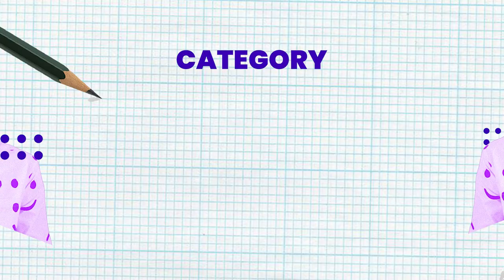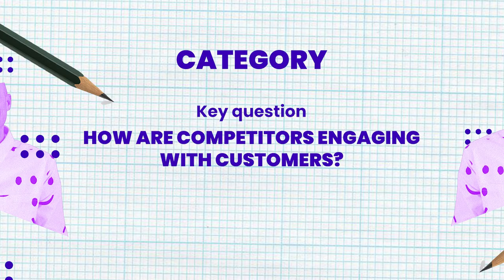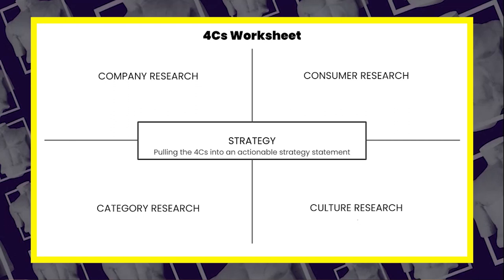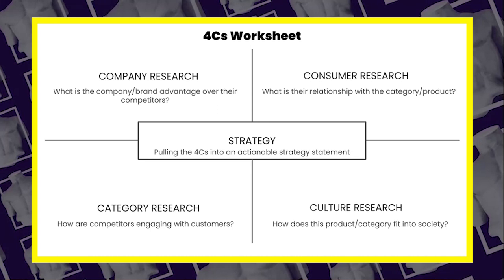So let's dive into the four C's starting with category. The key question here is: how are competitors engaging with customers? What we want to achieve at this stage is the lay of the land — to assess what our competitors' messaging is, their branding, their product and services, what distinctive assets they have, how they are positioning themselves, and to look for any category tropes.